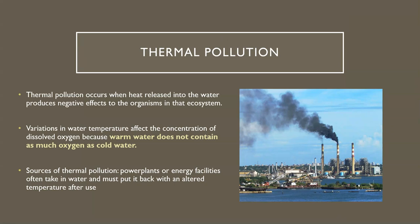The last topic is thermal pollution. Thermal pollution occurs when heat is released into water, and you wouldn't really think it has negative consequences on an ecosystem, but it really does. Different water temperatures have different levels of oxygen, and warm water does not contain as much oxygen as cold water. So if an influx of warm water enters into an ecosystem, it won't have as much oxygen. Things like power plants or energy facilities will often take water from a stream or river, use it to cool a machine or help in the process of making energy, and then put it back with an altered temperature — that's a source of thermal pollution.